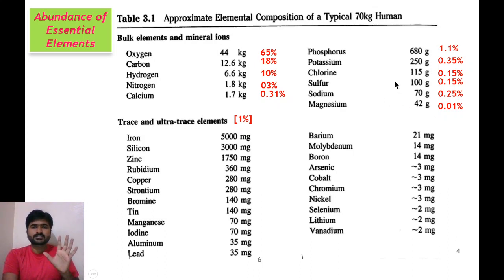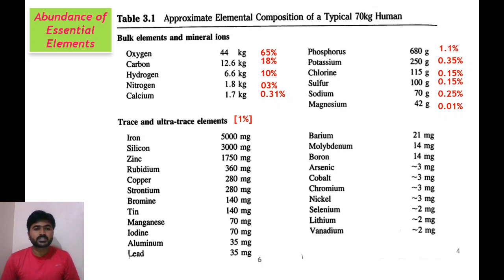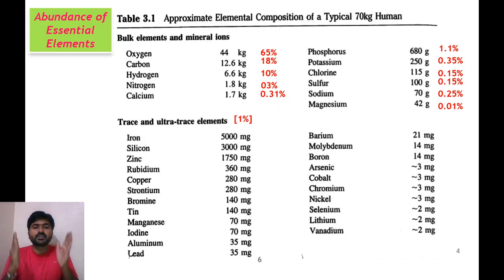These are approximate, not exact, values for each element. Some remaining elements are present at around 0.25% and 0.01%. There are also trace and ultratrace elements present in the human body — all these elements together constitute just 1% of the weight of a 70 kg human. For example, around 5000 milligrams (approximately 5 grams) of iron is present in a 70 kg human. Each and every element has its own role and plays an important part in the better functioning of any biological system.